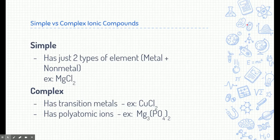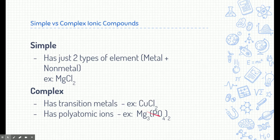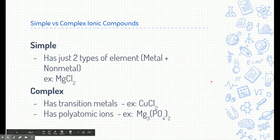Here's a quick preview about simple versus complex ionic compounds. Simple ones, as we learned last time, are just two different types of elements combined together. For example, magnesium and chlorine combine to make magnesium chloride, which is a simple ionic compound. Complex ionic compounds have exceptions, such as transition metals and polyatomic ions, which require special handling.